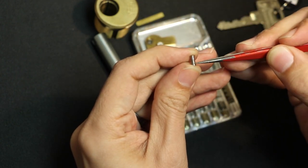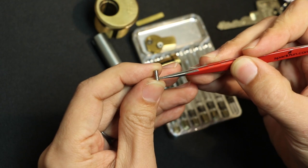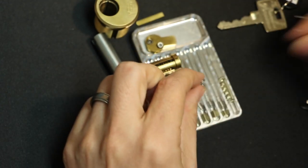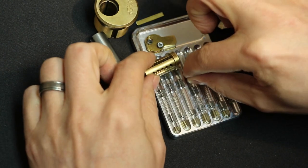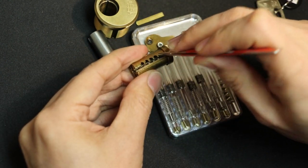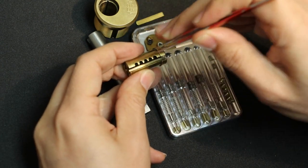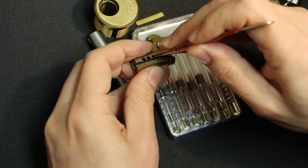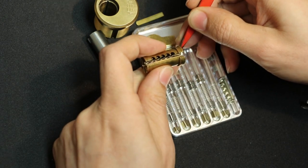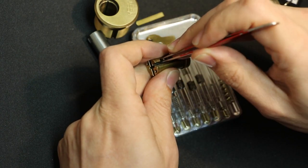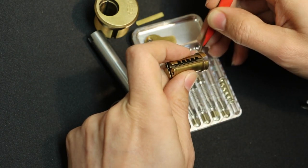So, these serrations here are the false gates, like that. And then, the deep one here is your true gate, and that's what the sidebar drops into. And then, each of these has a small spring, like this.